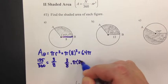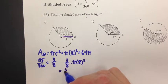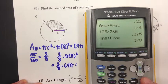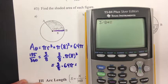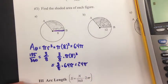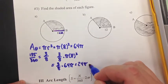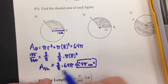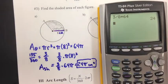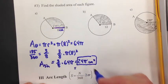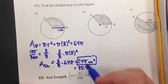Multiplying 3/8 by pi times 8 squared gives us 3/8 times 64 pi. Three-eighths times 64 gives me 24, so my answer is 24 pi. If this was centimeters, that's 24 pi centimeters squared as the shaded area. You could also write that as 24 times pi, which is approximately 75.4. So 75.4 cm² is our answer for part a.